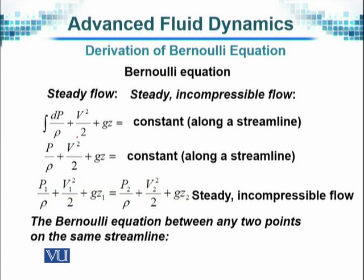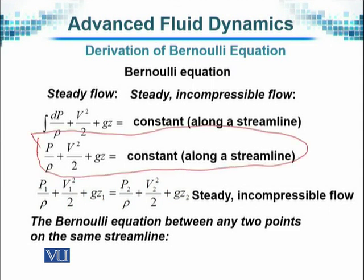We will get back the same equation. And this can be reduced as P over rho plus V square by 2 plus gz as the Bernoulli's equation. This is the most common form of Bernoulli's equation that we use in practice in real life.